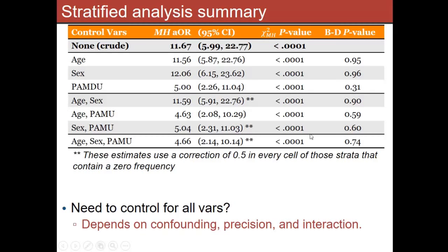Do you see a pattern here? What's the variable that, once you control for it, things move a lot? It's the previous antimicrobial use. Control for age and sex doesn't really alter things much, but once we control for previous antimicrobial use, that seems to be meaningful in the analysis. We see an odds ratio around 4.66.